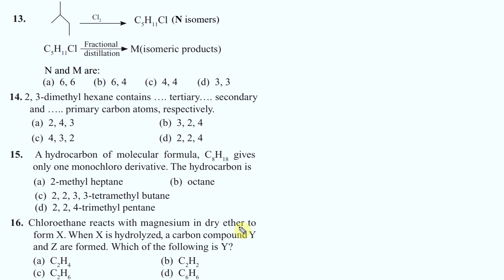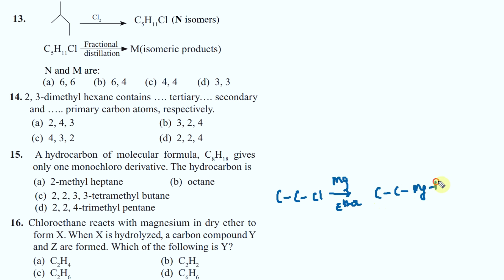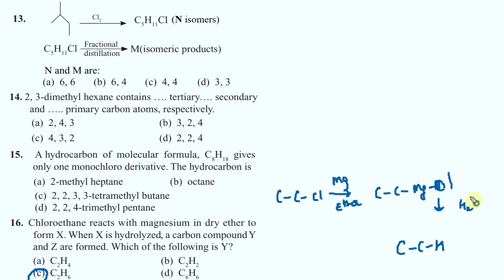Chloroethane reacts with magnesium and dry ether to give Grignard's reagent. This on hydrolysis - meaning adding H2O, an acidic hydrogen - you get ethane. So you basically get ethane.